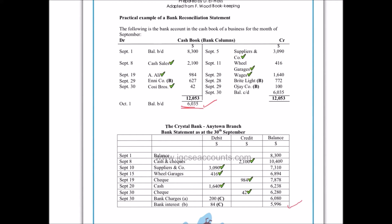So obviously there's a difference between what we think — that we have £6,035 — and what the bank thinks, which is a lesser amount of £5,996. The reason why we put together a bank reconciliation statement is to explain this difference as a result of a delay in time.